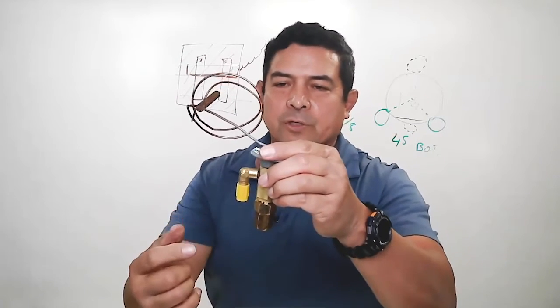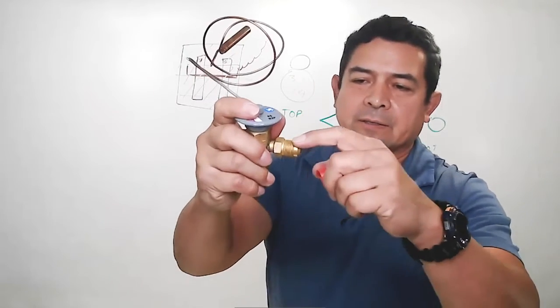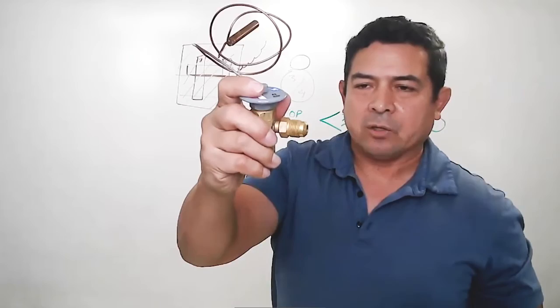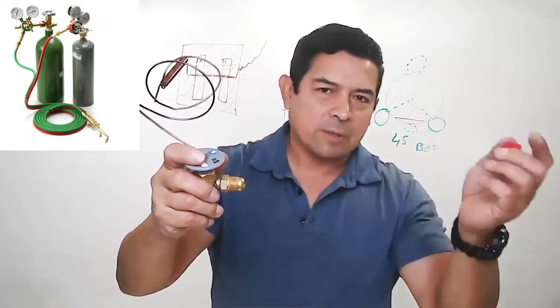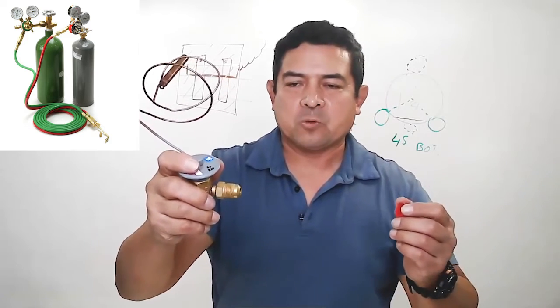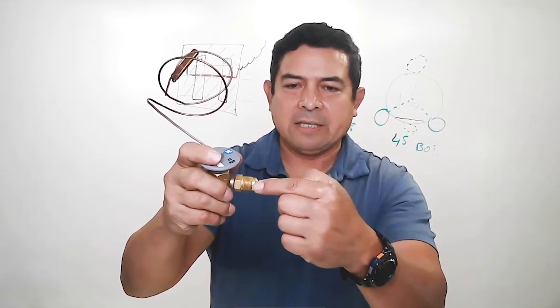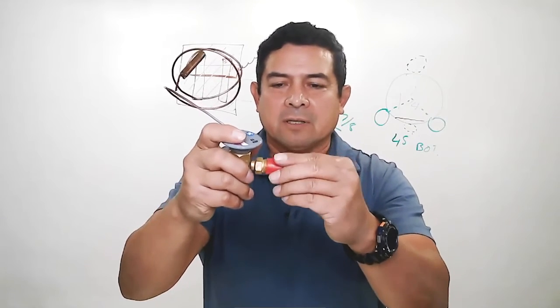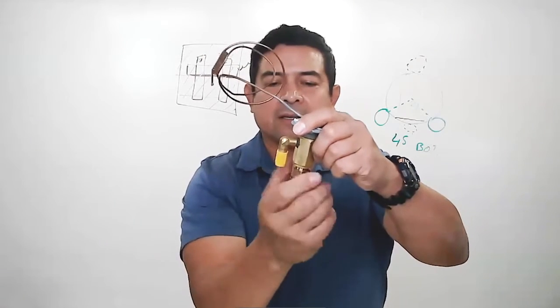If these were not threaded, if this was sweat, in other words, you're going to use your torch and you get some silphos, your oxy acetylene rig, or some of you like the turbo torch, whichever, you're going to have to heat this up so you can melt the silphos. To do that, well, guess what? You're going to have to take this apart.